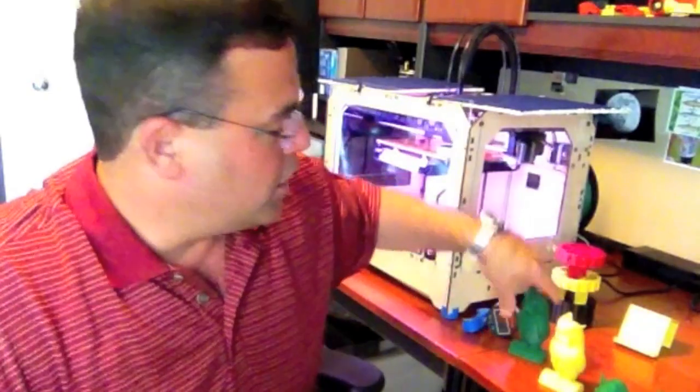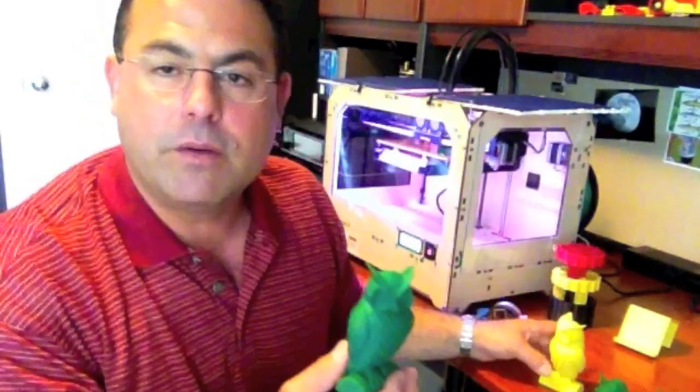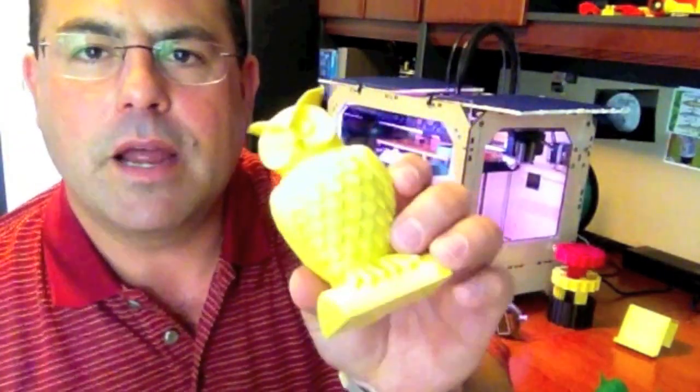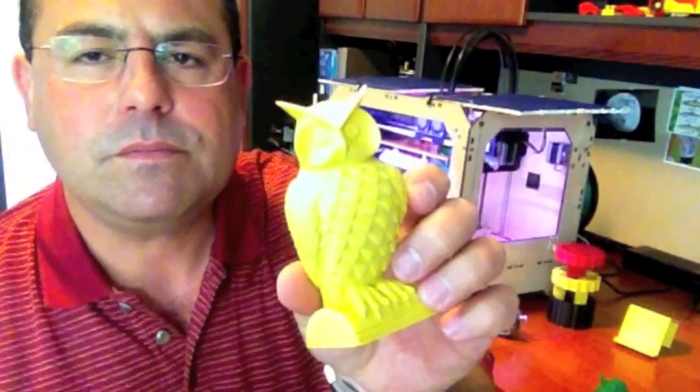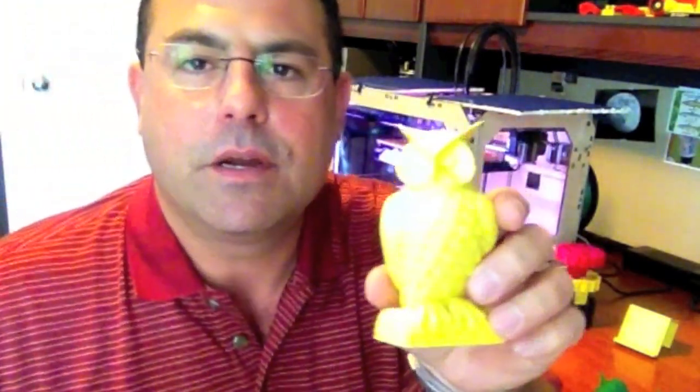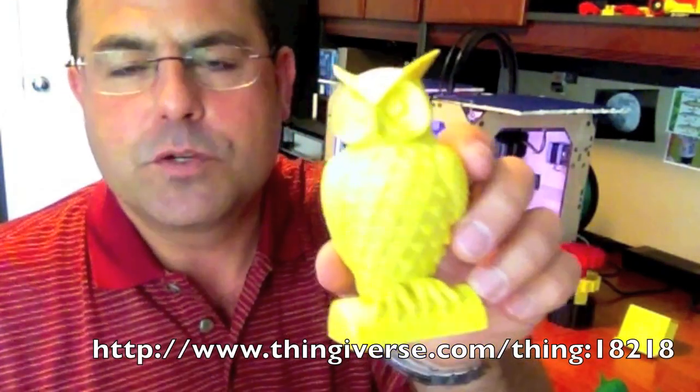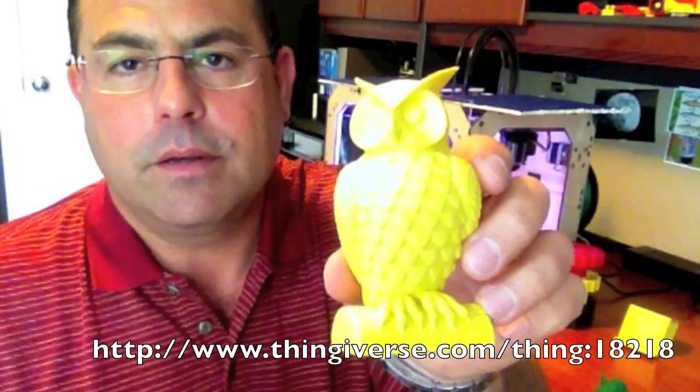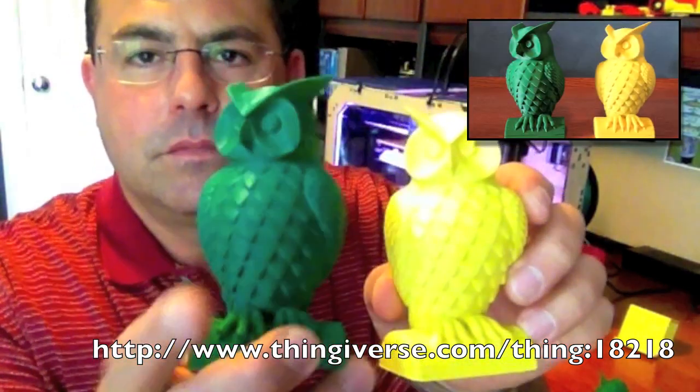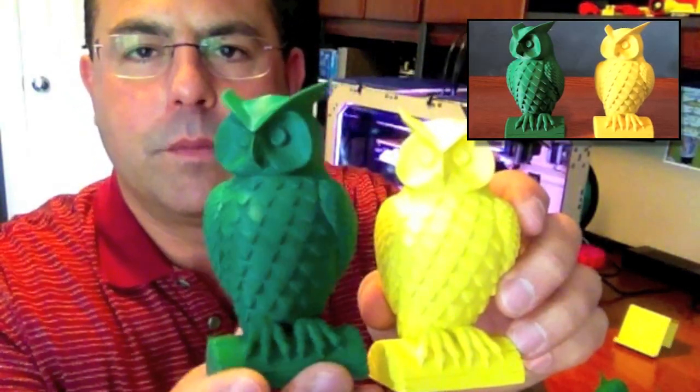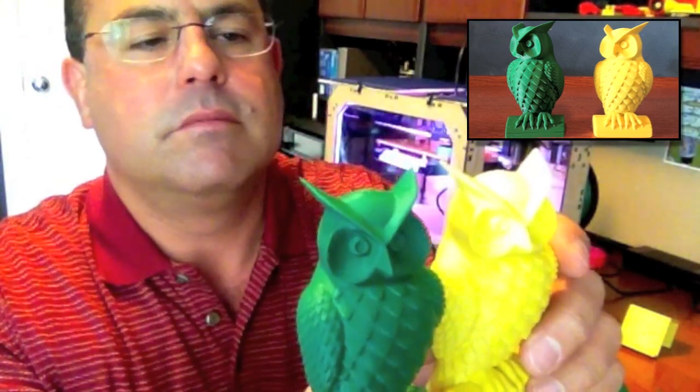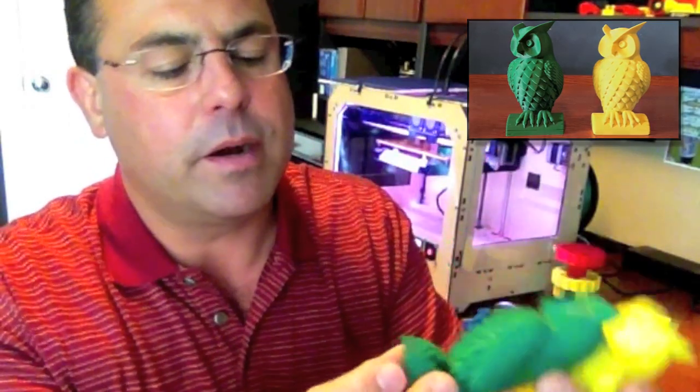As a comparison, I wanted to see what the Proto Paradigm Green was like compared to yellow. So I took something I'd already printed out in yellow. This is an owl off of Thingiverse, as is Yoda. I'll put those links in here. This was printed on MakerBot filament, and then I printed one with the Proto Paradigm filament. They're both identical. I didn't have any problem at all with the Proto Paradigm filament.